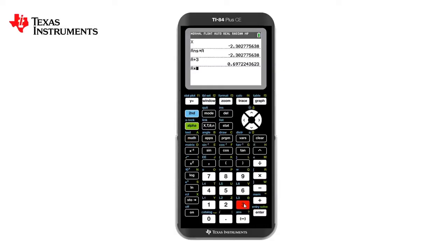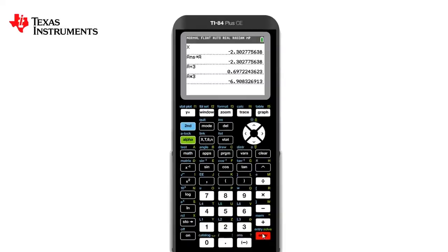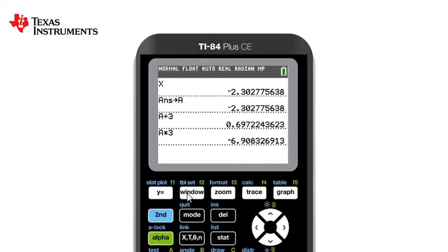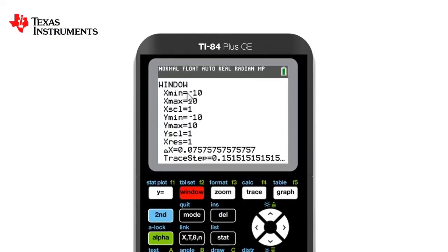If we want to change the view of which we see the graph, we can press window. As you can see at the moment, it is set from minus 10 to 10 in both axes.